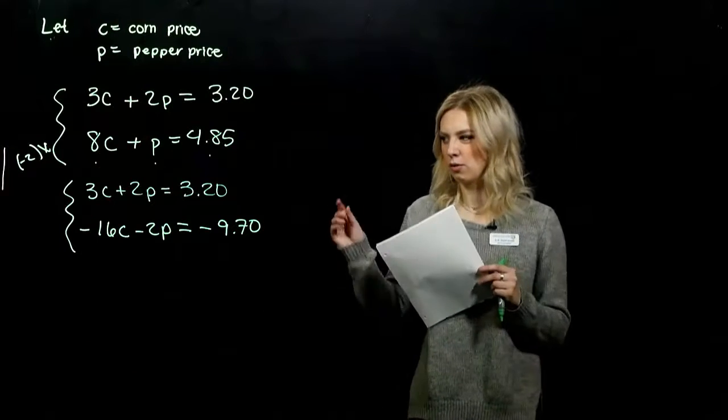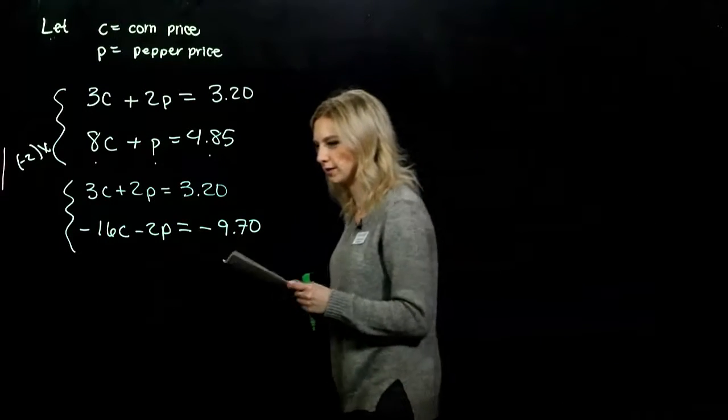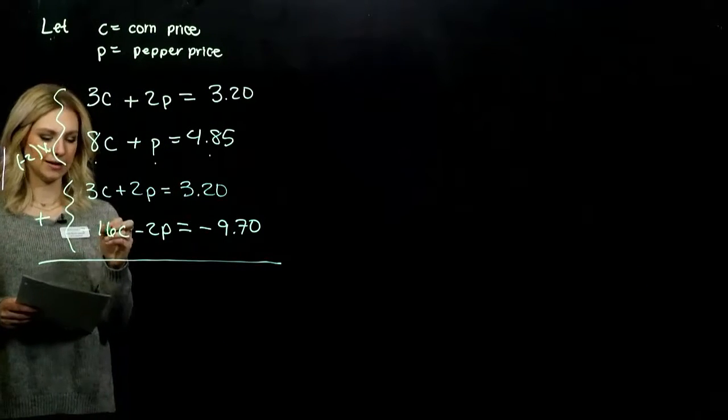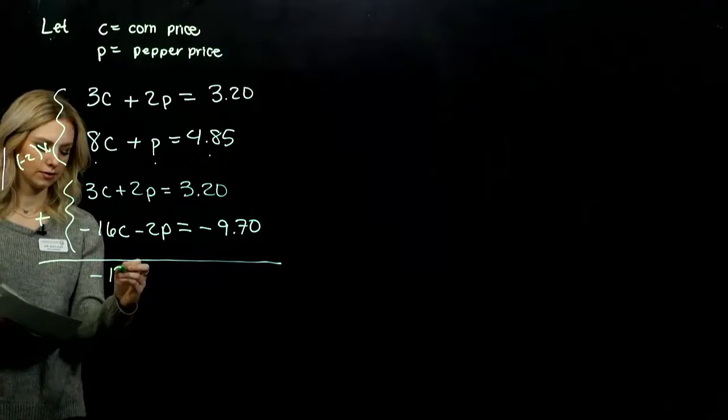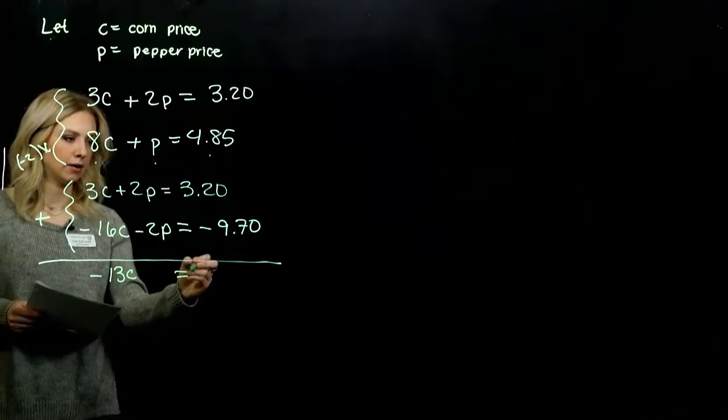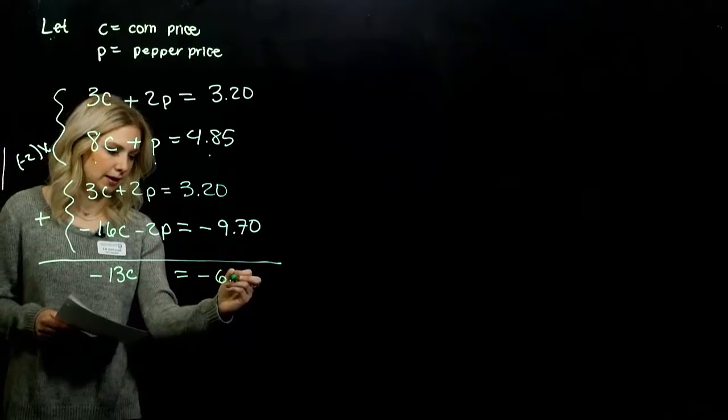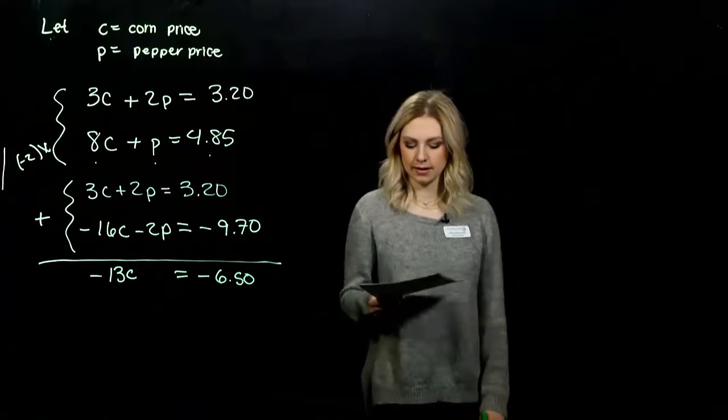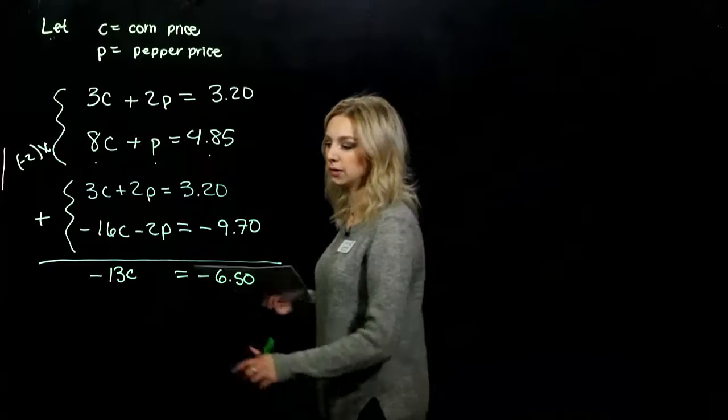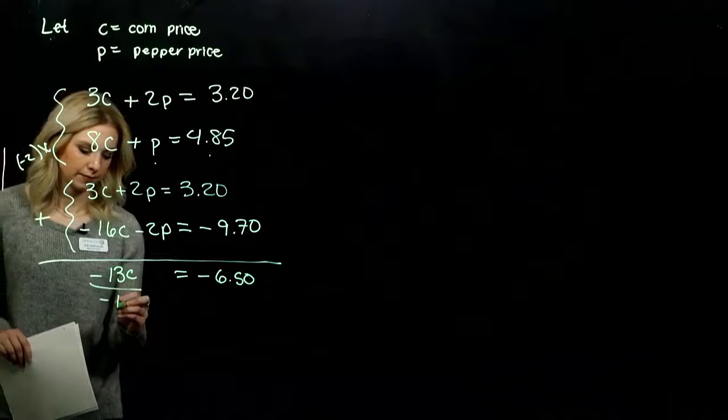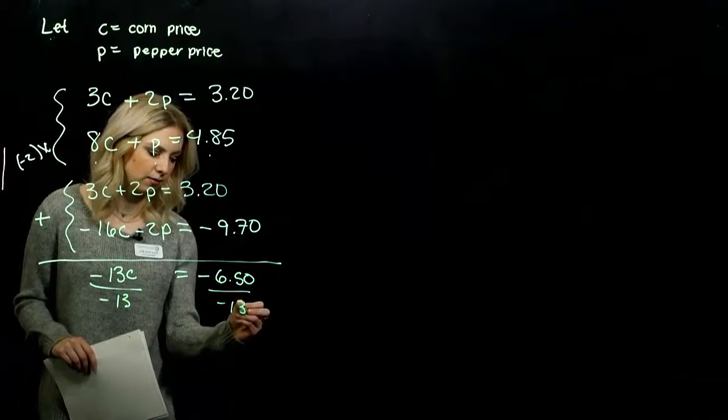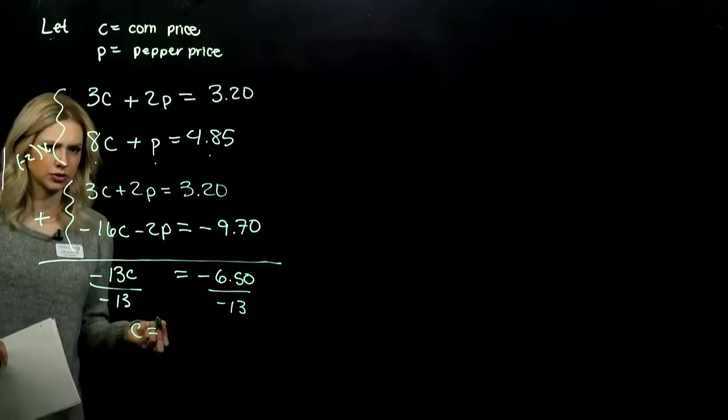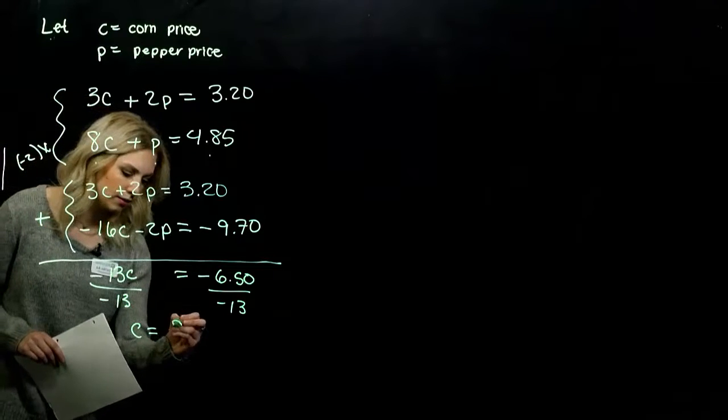And now every single term down here, we need to multiply by negative two. So we're looking at negative 16c minus 2p equals negative 9.70. When we add those two lines together, P's are going to be gone. We have negative 13c equals negative 6.50. When we do the division, we've got negative 6.50 divided by negative 13, which is 50 cents.